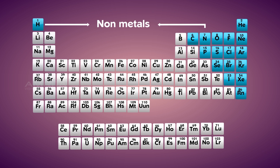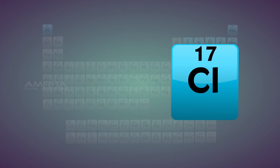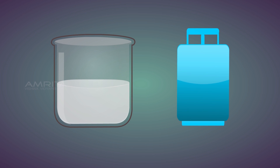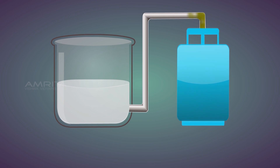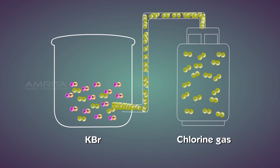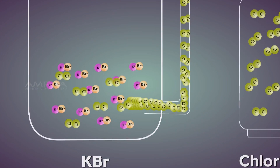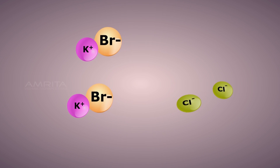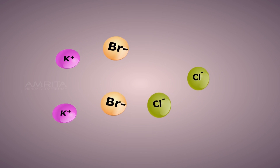Non-metals also take part in displacement reactions. When chlorine gas is passed through an aqueous solution of potassium bromide, chlorine will displace bromine from the potassium bromide solution.